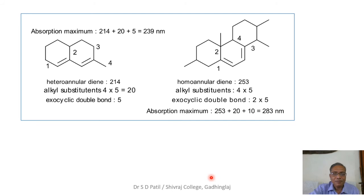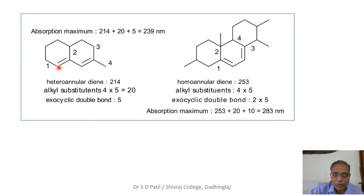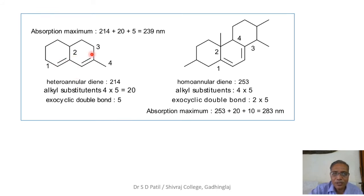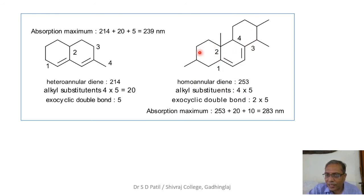Even though the structures appear complicated, concentrate only on the conjugated system. This next example is a heteroannular diene, so the base value is 214 nm. There are four alkyl substituents — numbers one, two, three, and four — adding 4 × 5 = 20 nm. This double bond is exocyclic to ring two, adding 5 nm. Total lambda max is 214 + 20 + 5 = 239 nm.